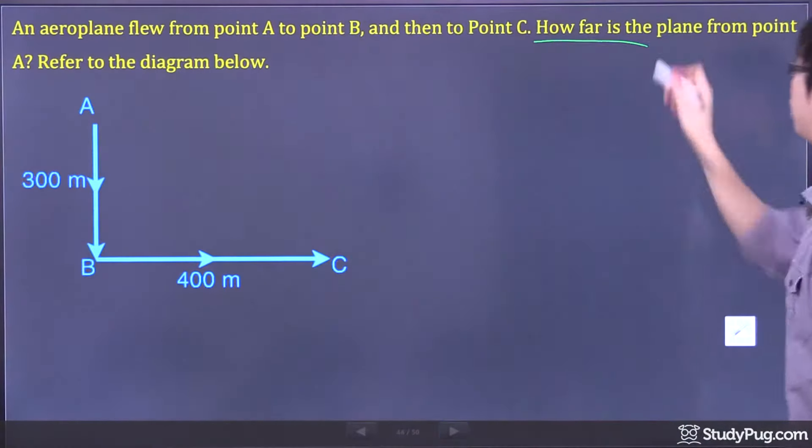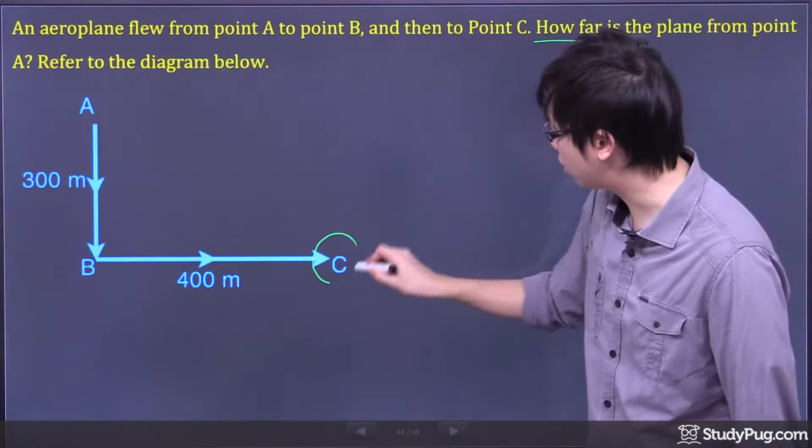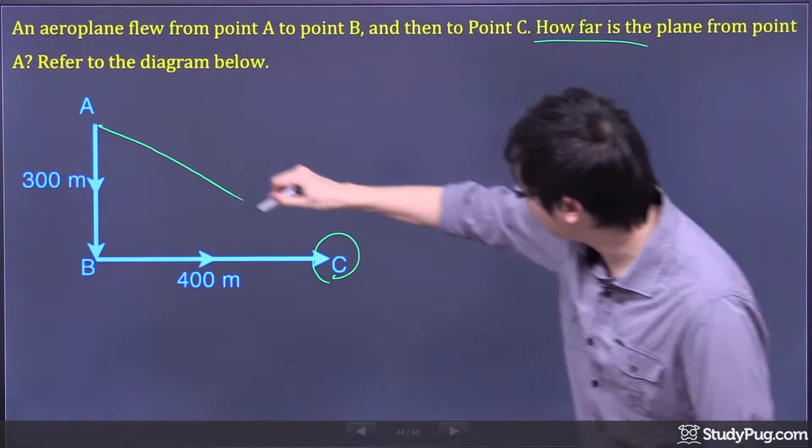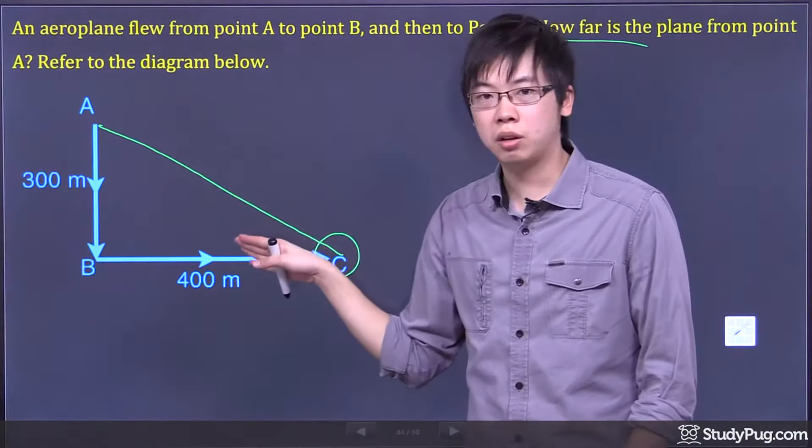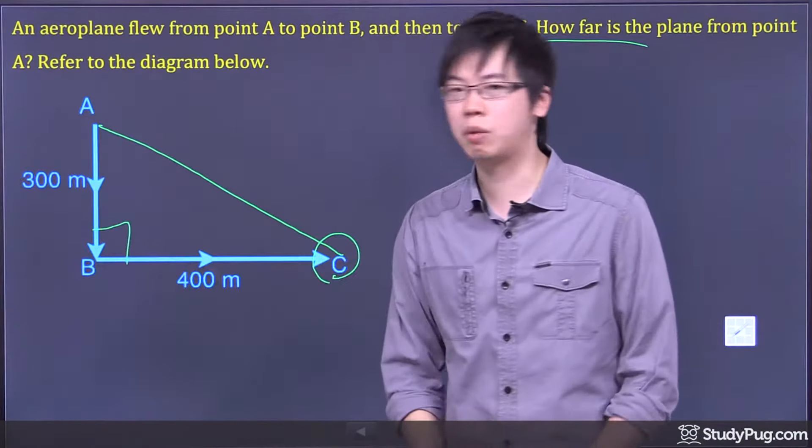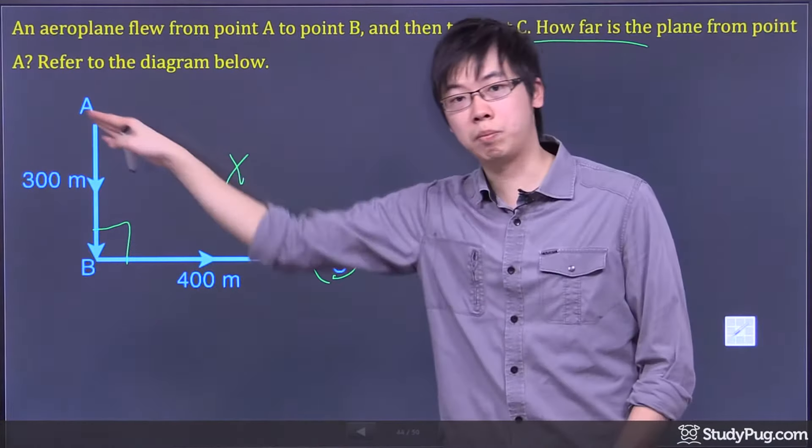Okay, and we're trying to figure out how far is the plane from point A, which means you're now here. We're looking for how far you are from where you started. So that's the side right there. And as you can see, that's a right triangle. So it looks like you're missing the X over here, which is the hypotenuse.